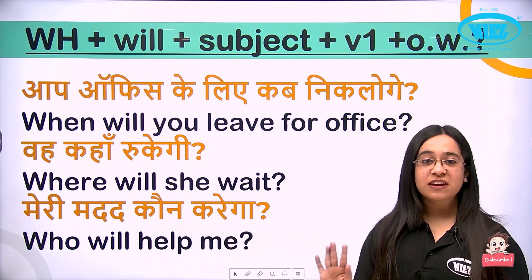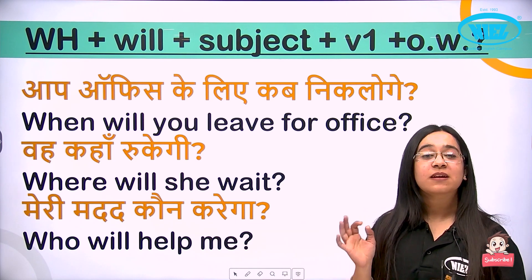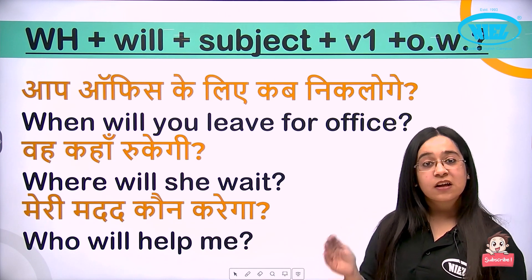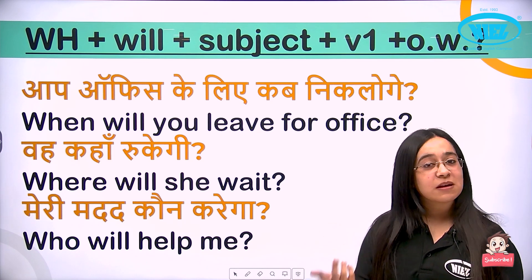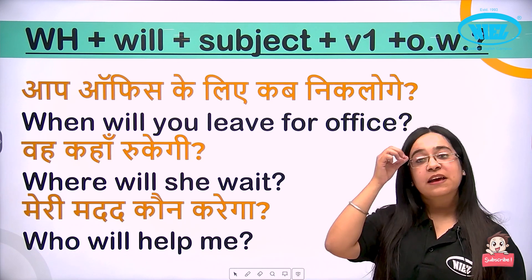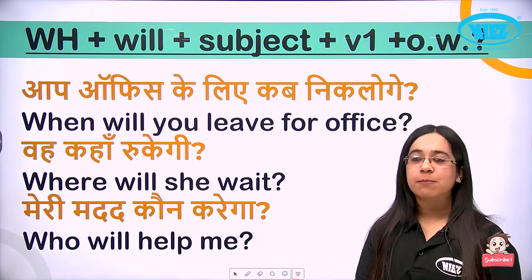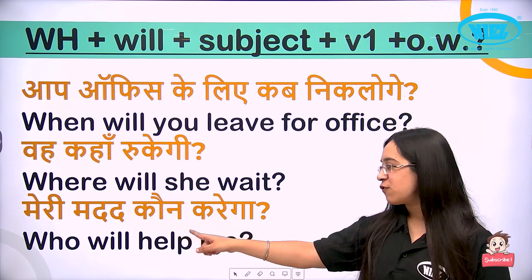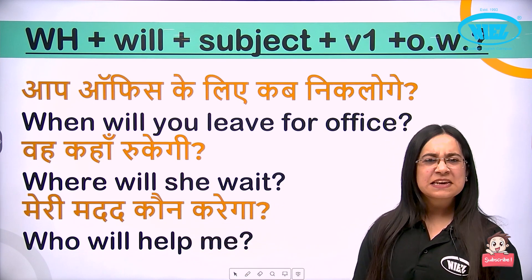With 'who,' there is no separate subject — who itself acts as the subject. 'Meri madad kaun karega' — Who will help me? I don't know who, so I simply say: who will help me. The structure is: WH family, helping verb, first form, other words — no additional subject needed with 'who.'